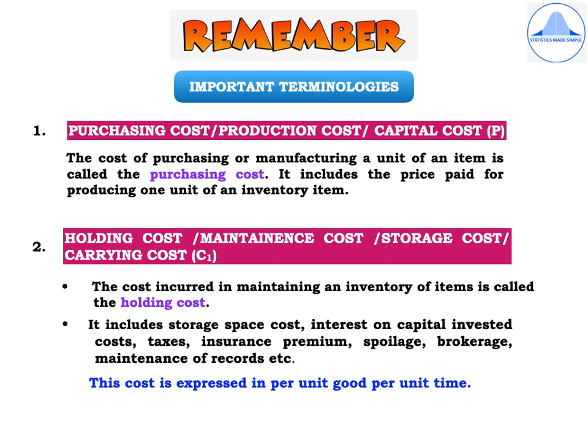Second, we have the holding cost, also called the maintenance cost, storage cost, or carrying cost, denoted by C1. The cost incurred in maintaining an inventory of items is called the holding cost. It includes storage space cost, interest on capital invested, taxes, insurance premium, spoilage, brokerage, and maintenance of records. This cost is expressed in per unit good per unit time.